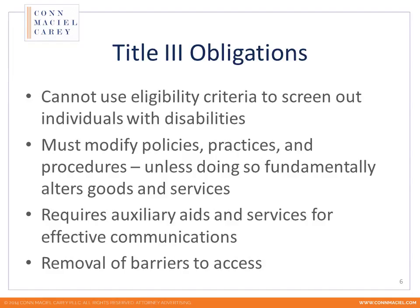Title III essentially obligates you not to use any eligibility criteria to screen out an individual with a disability. You need to modify your policies, procedures, or practices to ensure access and enjoyment of goods and services, unless doing so would alter the good or service you provide. It requires auxiliary aids and services for effective communication — for instance, a TTY device for hearing-impaired guests or other auxiliary aids for visually impaired guests. And then there is the removal of barriers to access, which covers the structural issues we'll discuss today.